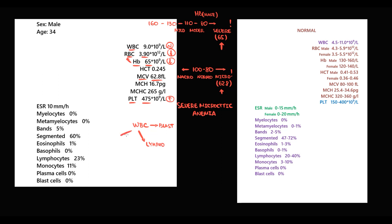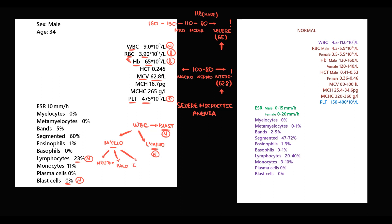The first cells we look at are blasts, because in a normal state there are no blast cells in peripheral blood — and here blast cells are zero, so it is perfectly normal. Next are lymphocytes, which are 23%, also normal. Myelocytes consist of neutrophils, basophils, eosinophils, and monocytes. Segmented neutrophil forms are normal, band forms normal, metamyelocytes normal, and myelocytes normal.